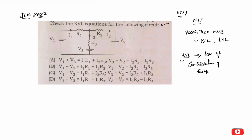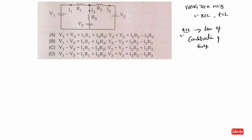Coming to KVL in general: in any closed circuit, the algebraic sum of all EMF is zero — the voltage drop of EMF equals zero. This is the important thing here. We will check KVL in a closed circuit. We have to check the sign convention — the voltage drop sign. Whether you check the voltage drop or the other convention, you have to apply KVL accordingly.